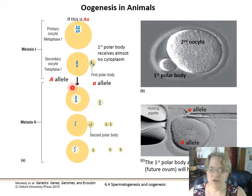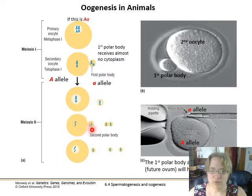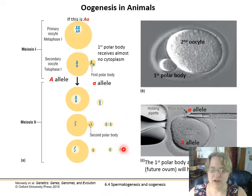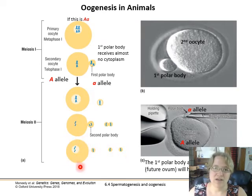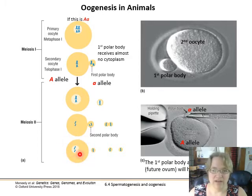During meiosis II, we have another unequal division, forming the second polar body. The first polar body also goes ahead and divides, so we end up having these three extra cells in order to basically conserve all the mitochondria and organelles and everything for that one egg cell.